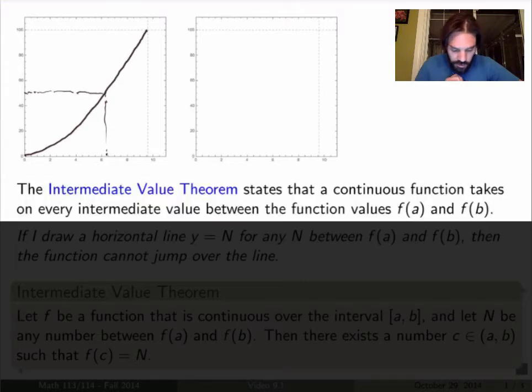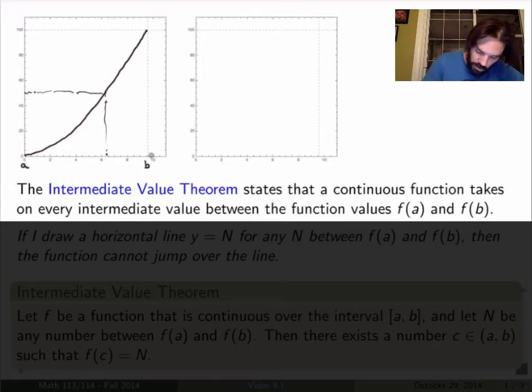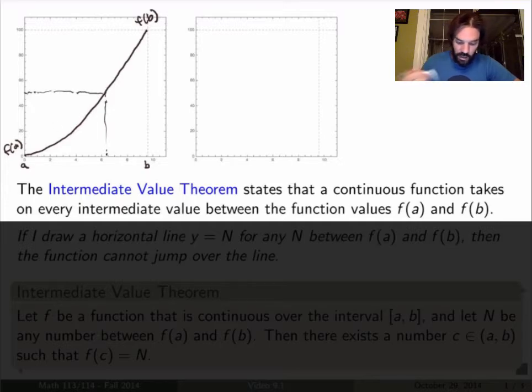So let me just formalize that. The Intermediate Value Theorem states that a continuous function, any continuous function, takes on every intermediate value between the function values f(a) and f(b). So in my example here, a was 0 and b was 9.58, f(a) was the position at 0, which is just 0, and f(b) was 100 meters. So what we're saying here is that the function here, the position function of Usain Bolt takes any intermediate value between 0 and 100 meters at a time between 0 and 9.58 seconds.